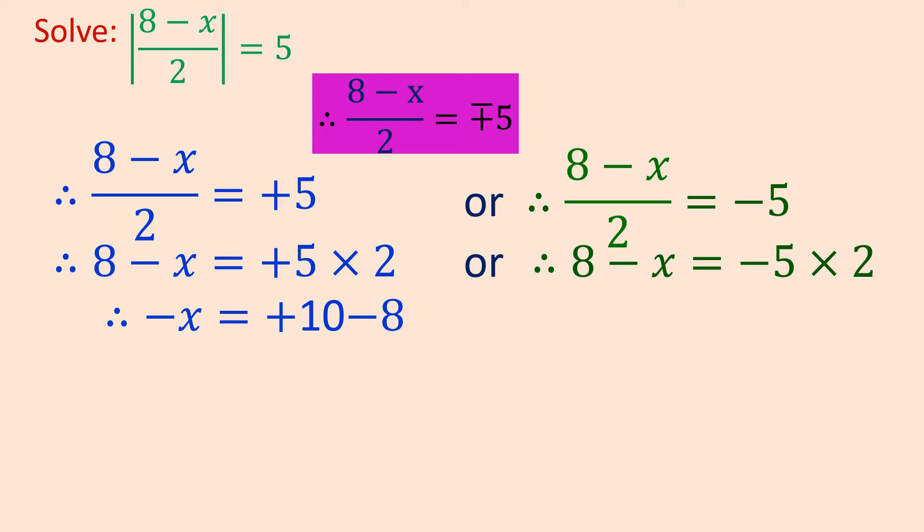Let us go for the next step. Minus x equals to 5 times 2, which will become 10, and 8 from the left side, plus 8, is transferred to the right side, so plus 8 will become minus 8. So we get minus x equals to plus 10 minus 8.